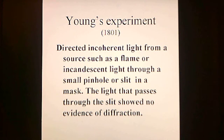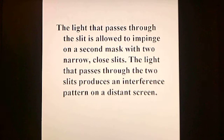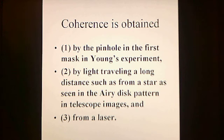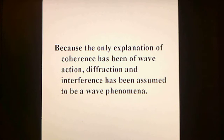Young's experiment in 1801 directed incoherent light from a source such as a flame through a small pinhole or slit in a mask. The light passing through the slit showed no evidence of diffraction. This light then impinges on a second mask with two narrow slits, and the light passing through those two slits produces an interference pattern on a distant screen. Coherent light is, by definition, light that produces a diffraction pattern on a screen after passing through a slit or pinhole. Coherence is obtained by the pinhole in the first mask, by light traveling a long distance such as from a star — as seen in the Airy disk pattern in telescope images — and from a laser. Because the only explanation of coherence has been wave action, diffraction and interference have been assumed to be wave phenomena.